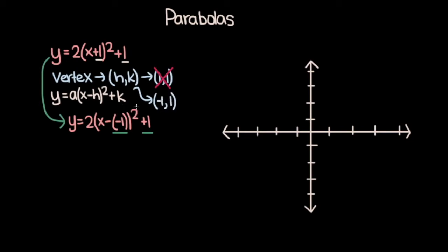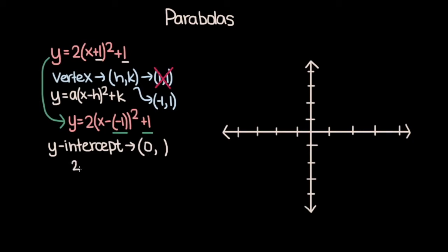Now that we've found the vertex, let's work on finding the y-intercept. We know the y-intercept is going to be 0 comma some y value. Recall that you can find the y value of the y-intercept by plugging in 0 for x. If we do that, we get 2 times 0 plus 1 whole squared plus 1, which is 2 times 1 squared, so just 2, plus 1, which is 3.